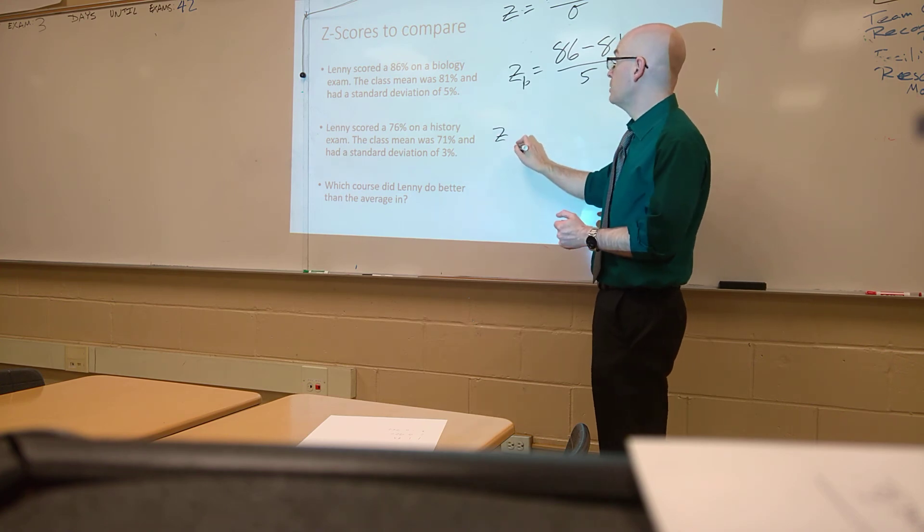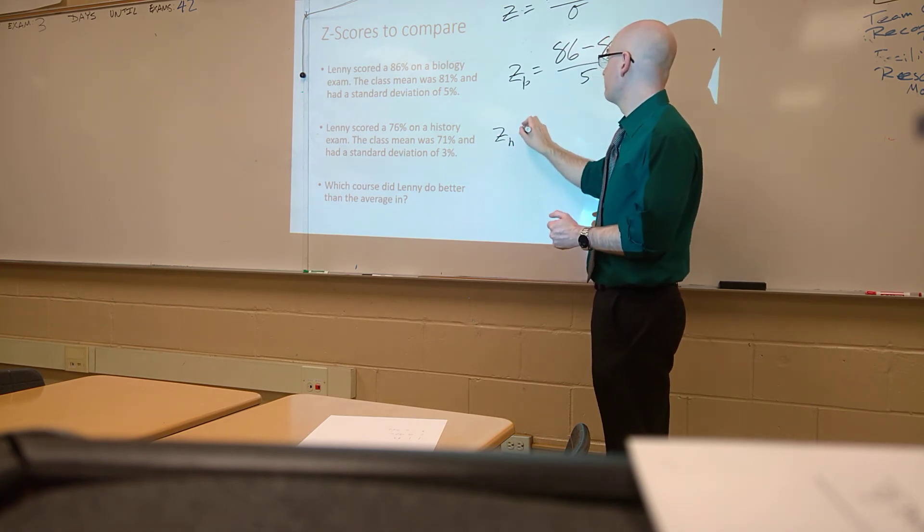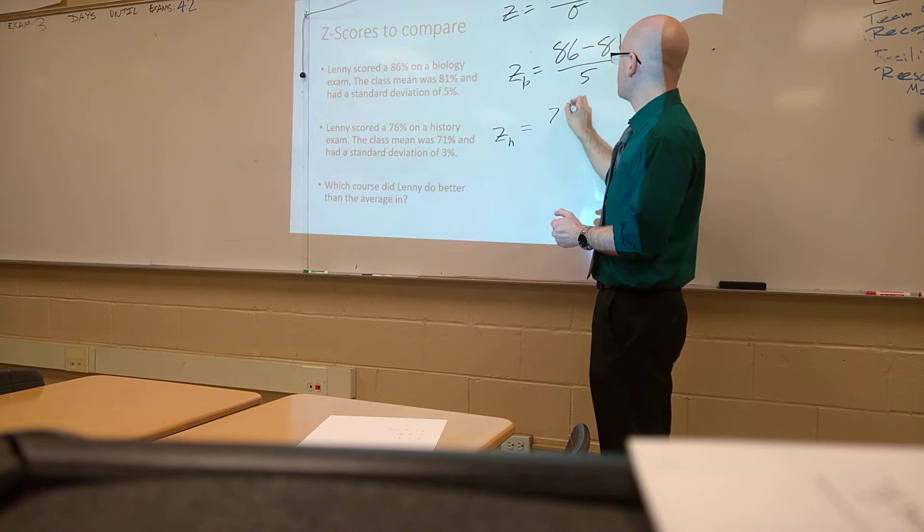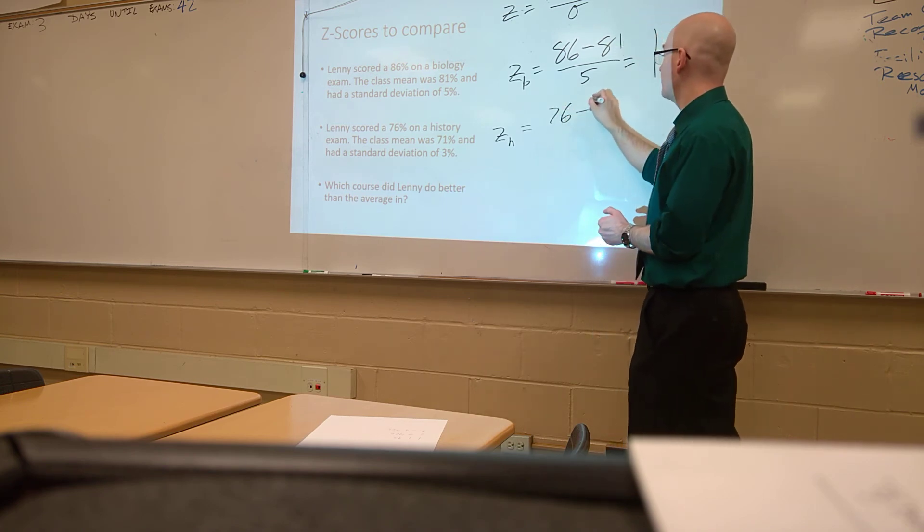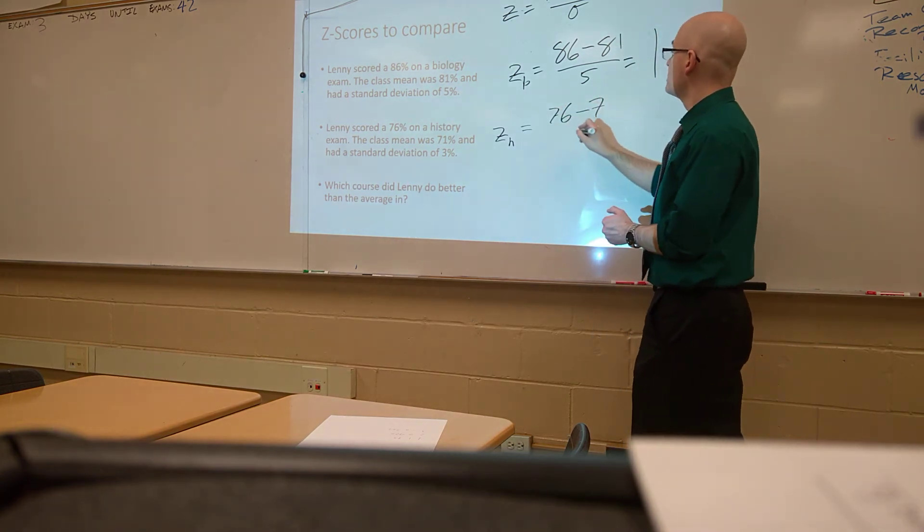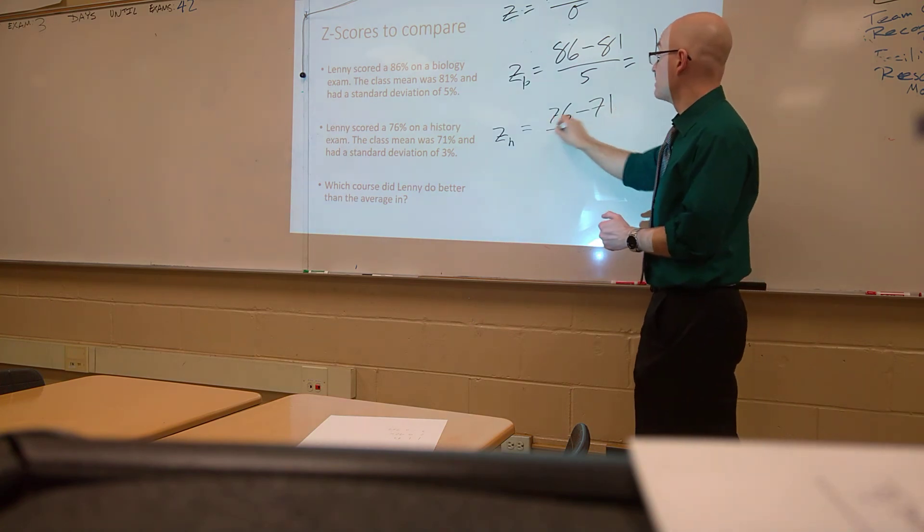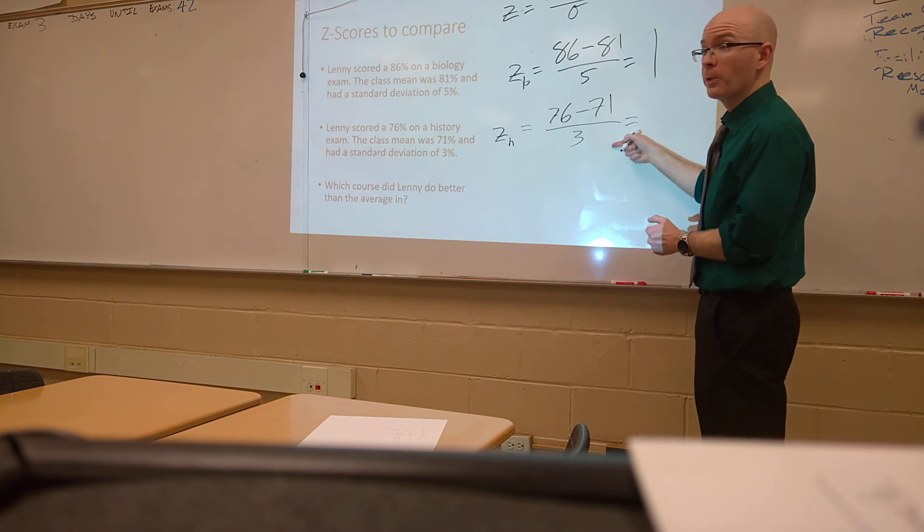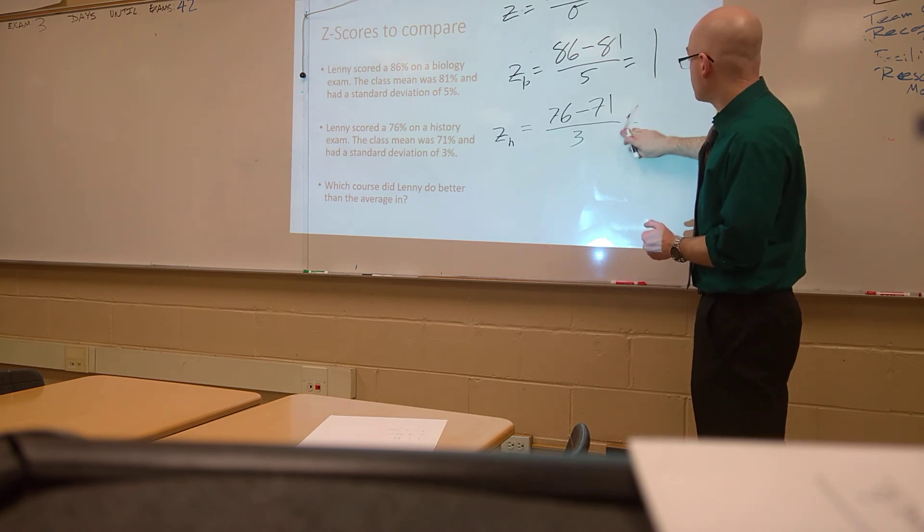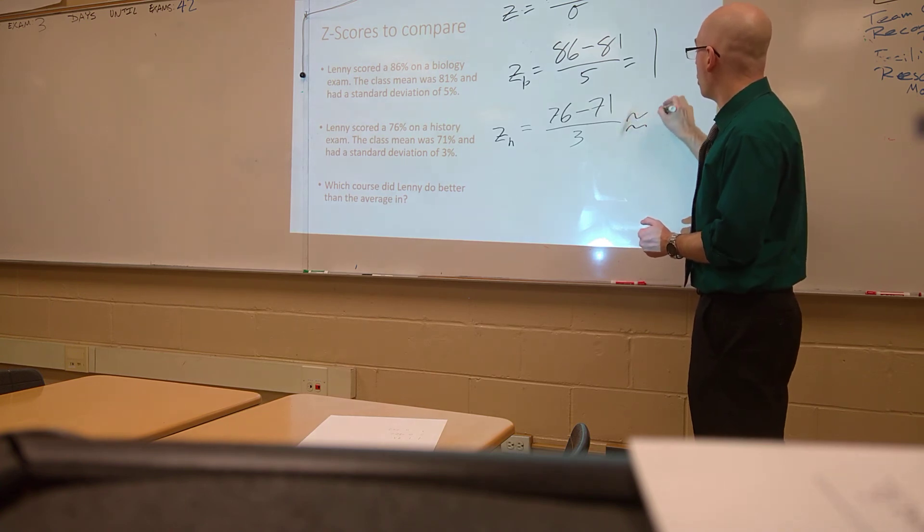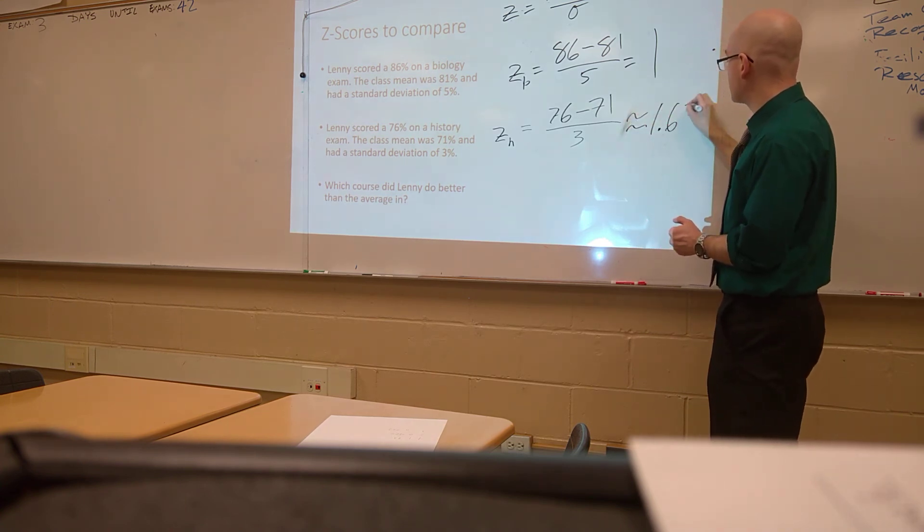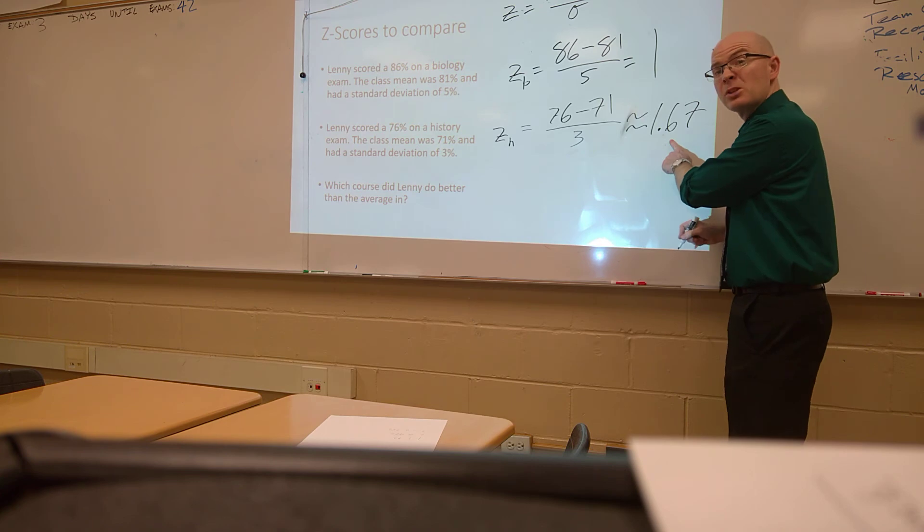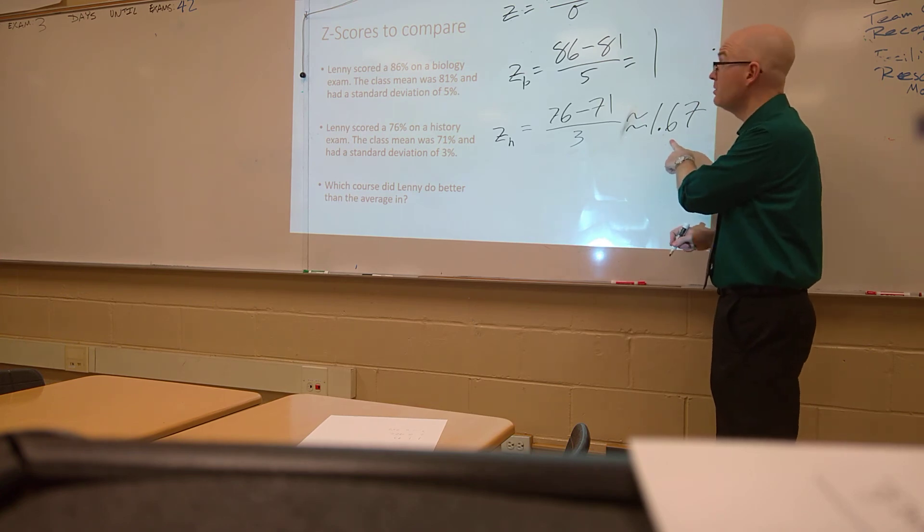Let's do z sub h for history, and their value is 76 for his score, minus 71, which is the class mean, divided by the standard deviation of 3. Now, this gives us 5 over 3, which is approximately 1.67. So he is almost two standard deviations better than the class mean.